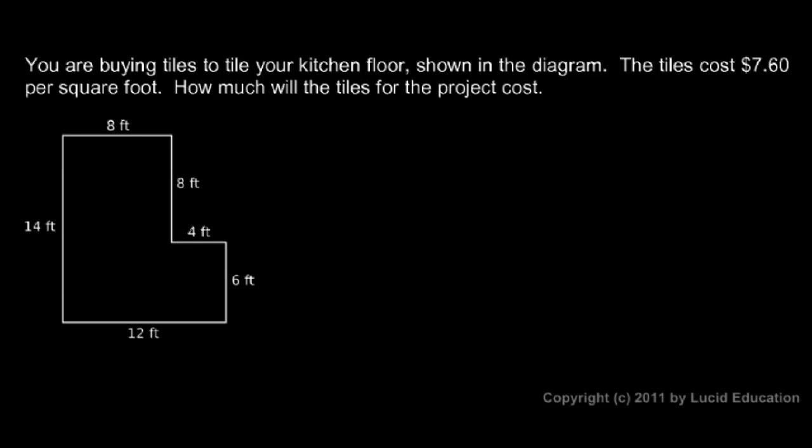And here's a practical example. You're buying tiles to tile your kitchen floor, which is shown in the diagram. So your kitchen isn't rectangular. It's this odd shaped figure. It looks something like a big fat L. The tiles cost $7.60 per square foot. How much will the tiles for the project cost? Well, we need to find the total number of square feet in the kitchen to do this.